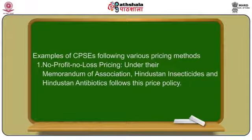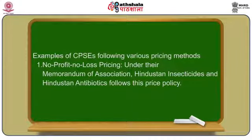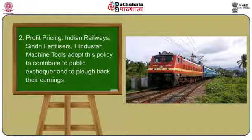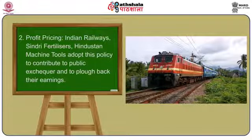Let us see the examples of CPSEs — central public sector enterprises — following various pricing methods. No profit, no loss pricing: under their memorandum of association, Hindustan Insecticides and Hindustan Antibiotics follow this pricing policy. Profit pricing: Indian Railways, Sindri Fertilizers, and Hindustan Machine Tools adopt this policy to contribute to the public exchequer and to flow back their earnings.